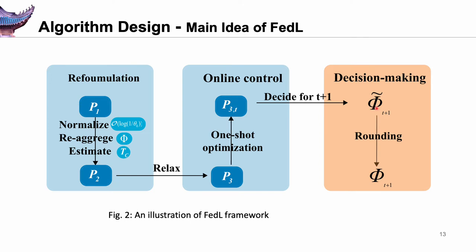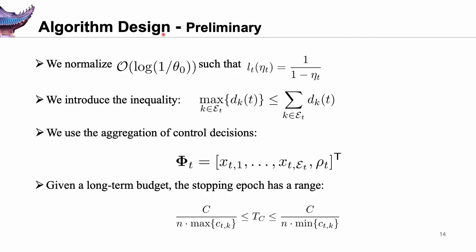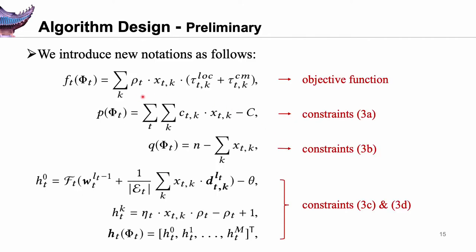Then, the selection decisions can be translated into integers by an online rounding algorithm without violating any constraints. Specifically, we first normalize and reduce the inequality to convert nonlinear terms into linear terms. After that, we use the aggregation of control decisions. Given a long-term budget, the stopping effort has a range. We introduce new notations: FT corresponds to the objective function of P1; P and Q correspond to constraints 3a and 3b; HT corresponds to constraints 3c and 3d.